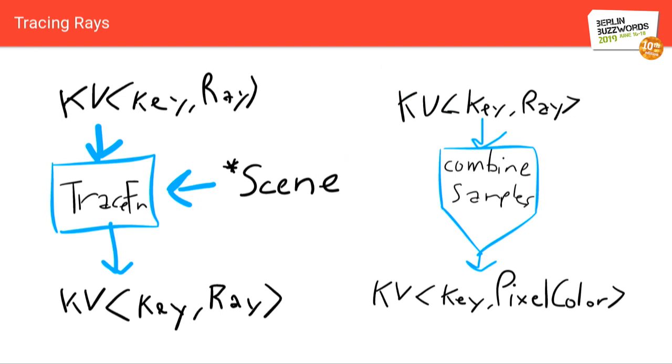Moving along, the actual trace takes in those initial rays, and the scene is a side input, and then later on, we use a combine to aggregate all the samples for a given pixel together.